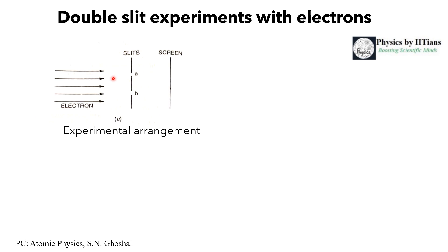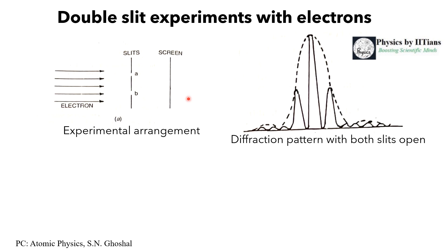Instead of a beam of photons or waves, we now have a beam of electrons passing through two slits A and B. According to classical mechanics, electrons through slit A would give one spot and electrons through slit B another spot. But that is not what we actually see. Instead, we see a diffraction pattern just like the one observed for waves. This gives experimental evidence that electrons behave like waves, interfering with each other to produce a diffraction pattern on the screen.